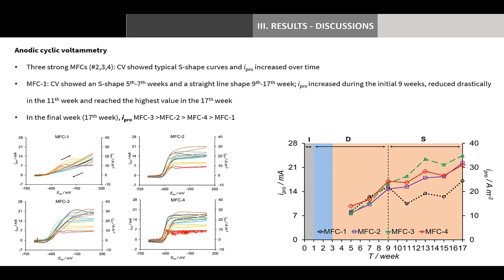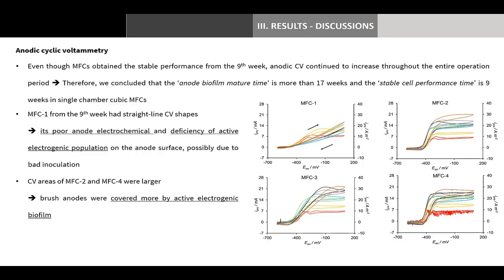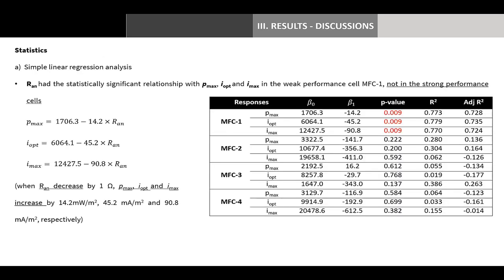Anode CV test is a good method to evaluate anode performance alone because it is free from other limiting factors such as cathode performance. When anode polarization resistance was too low — as in MFC2 and MFC4 — it was difficult to distinguish anode performance, and anodic CV can be a solution. Simple linear regression analysis showed that anode polarization resistance had a statistically significant relationship with maximum power density, optimum current density, and maximum current production in the weak performance cell MFC1. Anode polarization resistance was not a statistically significant explanatory variable for those responses in the strong performance cells.